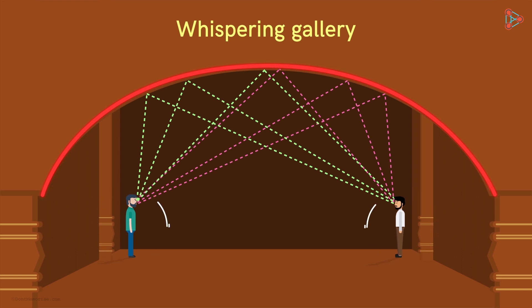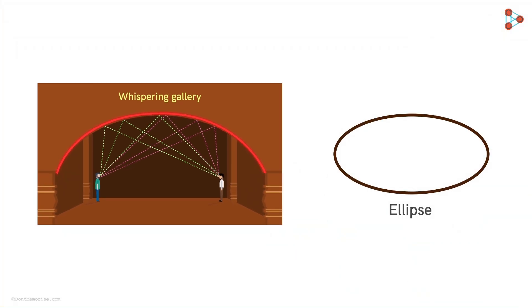Each of these two special points of the ellipse is referred to as focus. And together, they are called the foci of the ellipse.